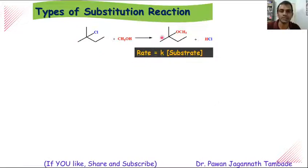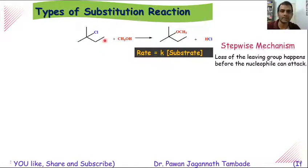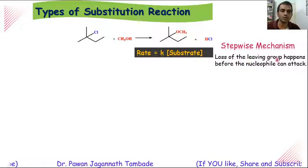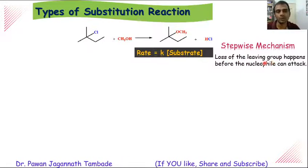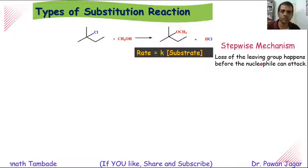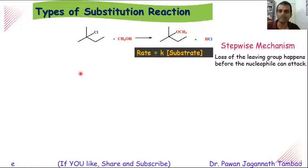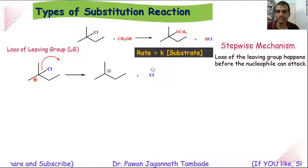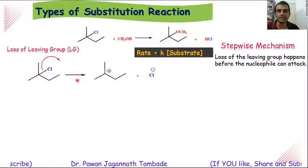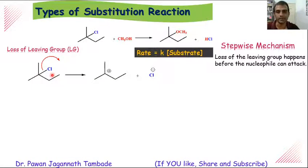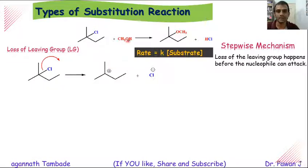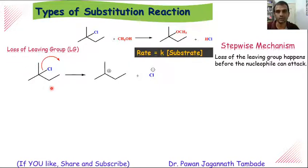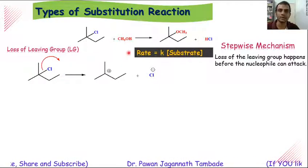After examination of a number of such reactions, it has been observed that in these particular cases the mechanism is stepwise. Initially there is a loss of leaving group, and later on the nucleophile attacks on the substrate molecule. In this mechanism there are certain steps. The first step is loss of leaving group — this carbon-chlorine bond breaks initially and this step is the rate-determining step. In this rate-determining step, the nucleophile is not present, and because of that the rate of reaction is depending upon concentration of substrate only, and it is independent of the nucleophilic species.